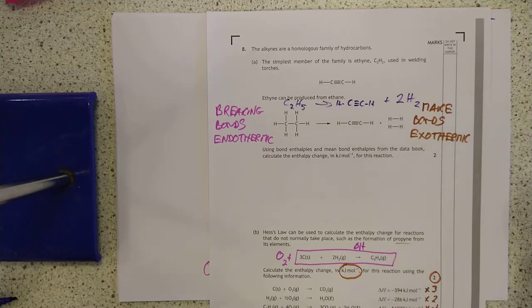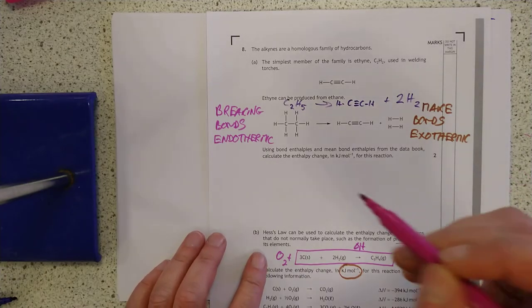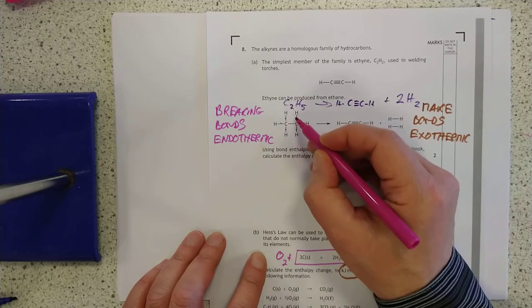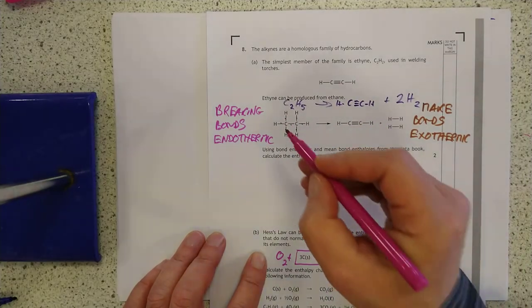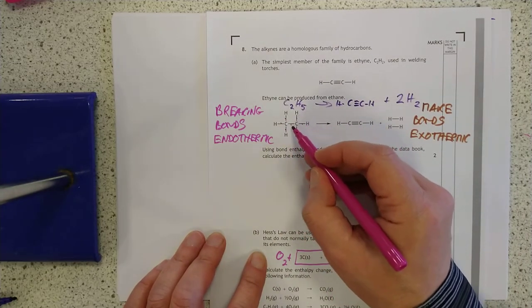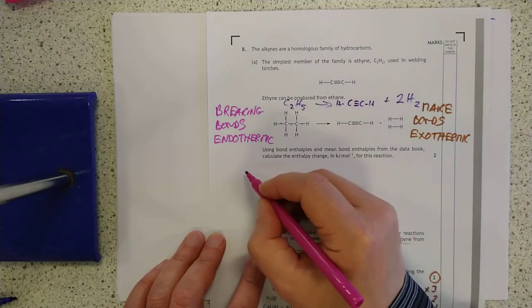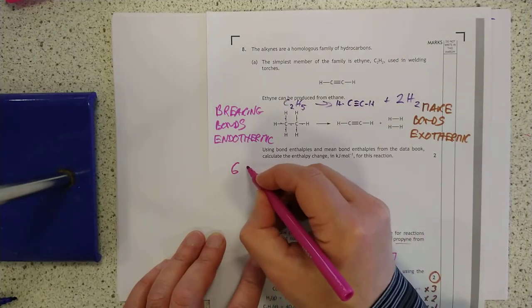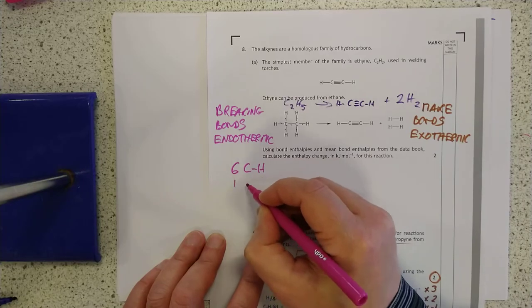So, let's look at the bonds we are going to break, which today is in purple. We're going to break one, two, three, four, five, six, seven bonds. That's six CH bonds, and one CC bond. So let's keep it in purple. So we're going to break six CHs, and one CC.